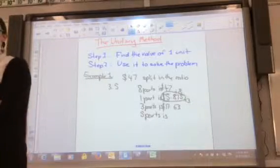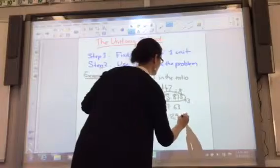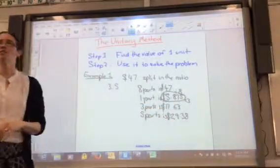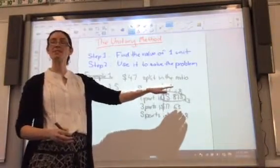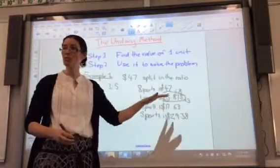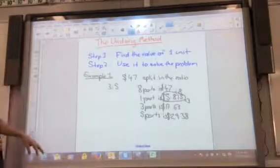29.375 until 0.38. So remember, our answer for money must have two decimal places. We've made an exception here. We've made an exception because we haven't got our answer yet. We're just doing our working out. We didn't want to introduce rounding error.